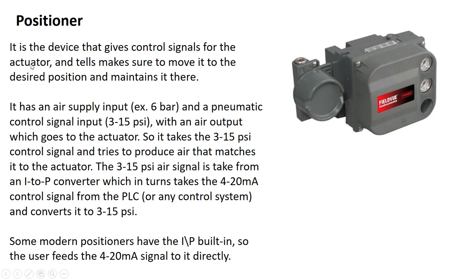The positioner is the device that gives control signals to the actuator. It ensures the actuator moves to the desired position and maintains it there. For example, if you want the valve 40% open, the positioner sends the actual air signals to the actuator so that it achieves and maintains that percentage. It has an air supply input — for example 6 bar — a pneumatic control signal of 3-15 PSI, which is an industry standard, and an air output that goes to the actuator.